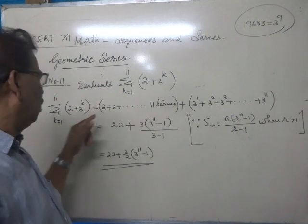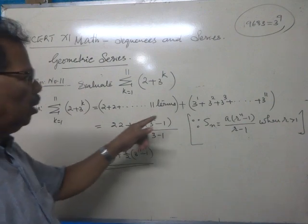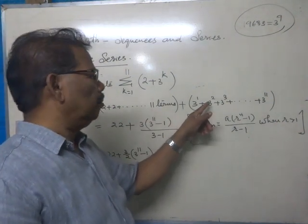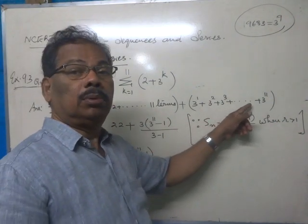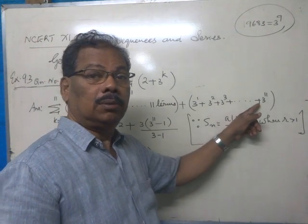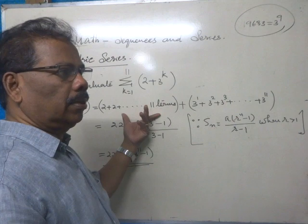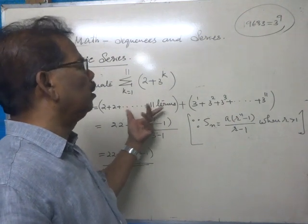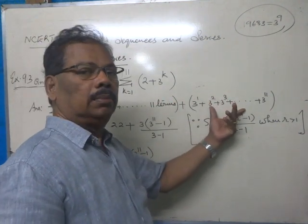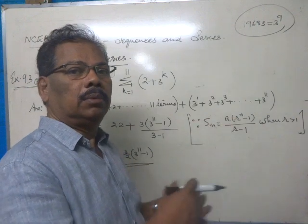plus 3 raised to 1 plus 3 squared plus 3 cubed, etc. up to 3 raised to 11. You have to get this sum and this sum, then add them together.